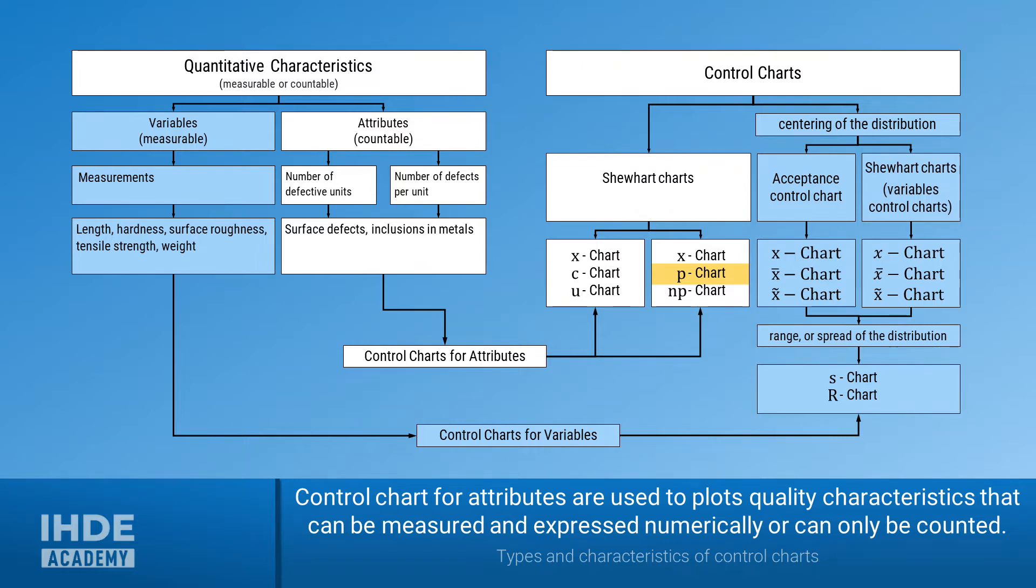Second, there are the attributive characteristics. Those are all characteristics that can only be counted. On the right side, we have the different control charts for attributive characteristics with a white background. There are six control charts for attributive characteristics. As already mentioned, this is about the p-chart for the proportion of defective units.